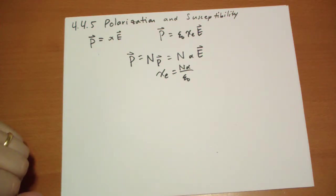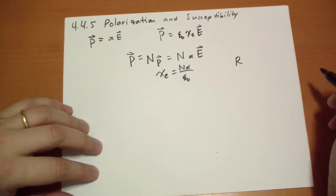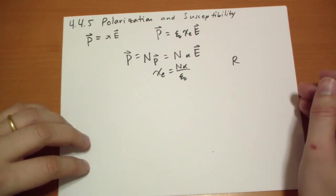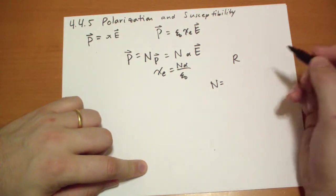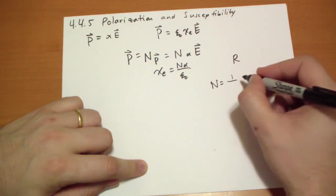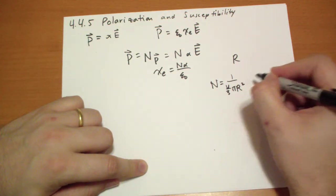So let's divide up our substance, give one space to each atom. Each atom has radius capital R. We'll put an atom at the center there for each atom's little space. So we get the number of atoms, the density of atoms, 1 over 4 thirds pi R squared.